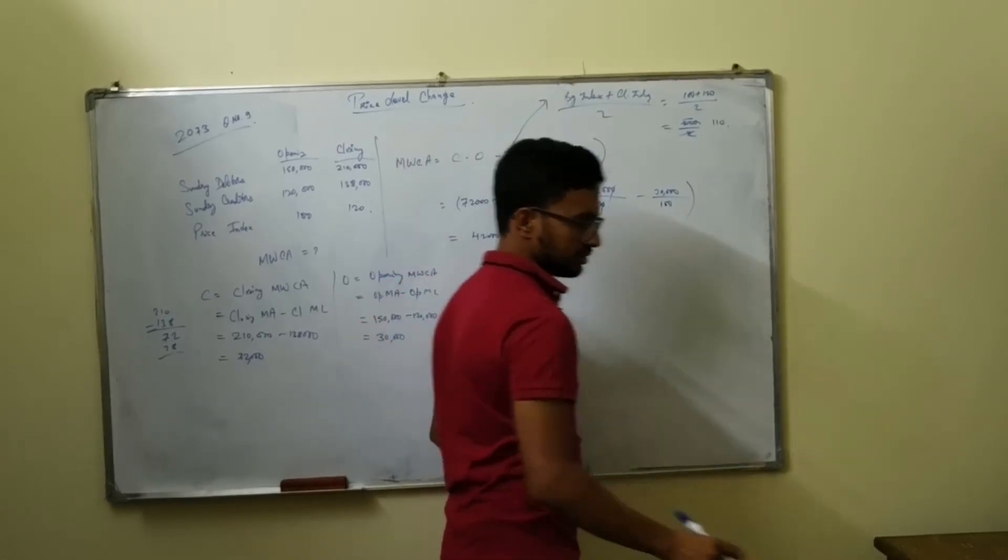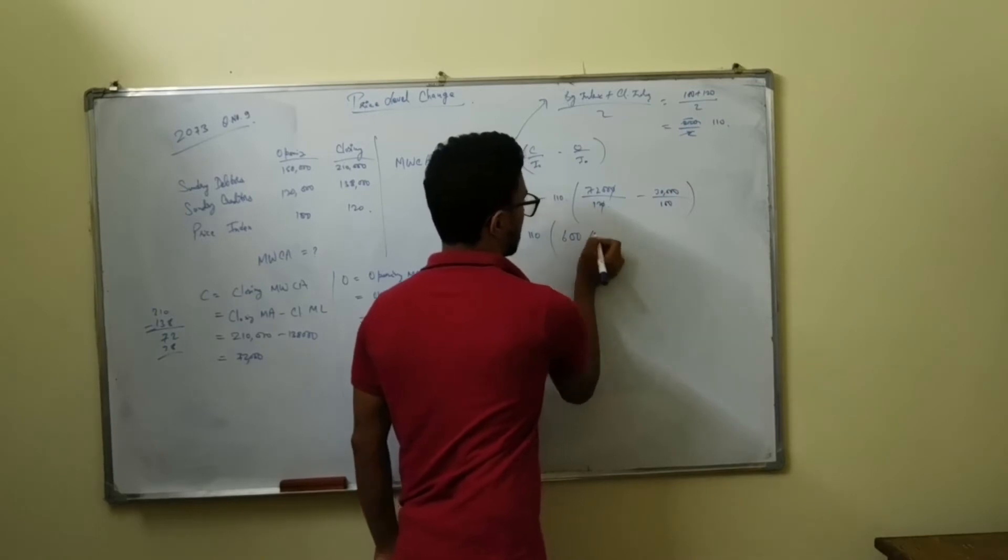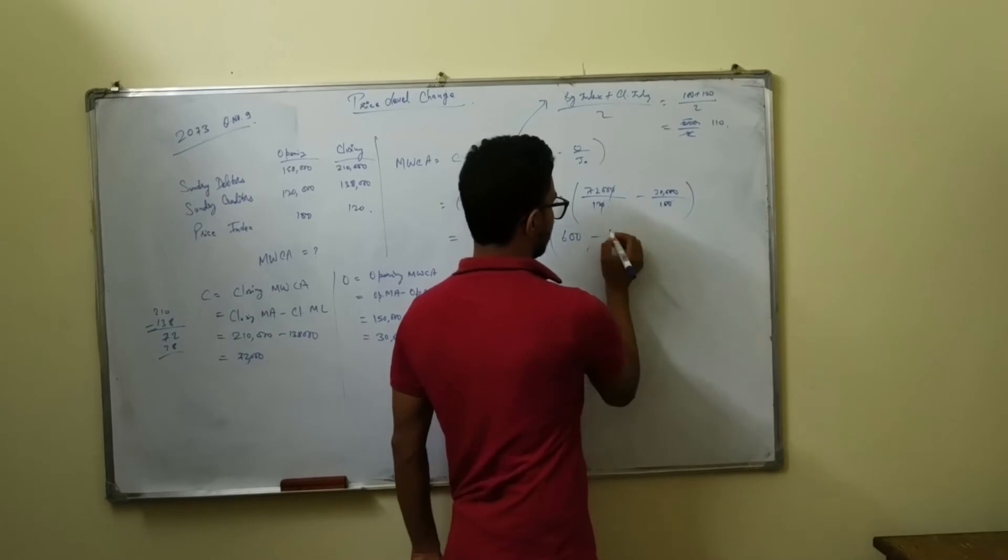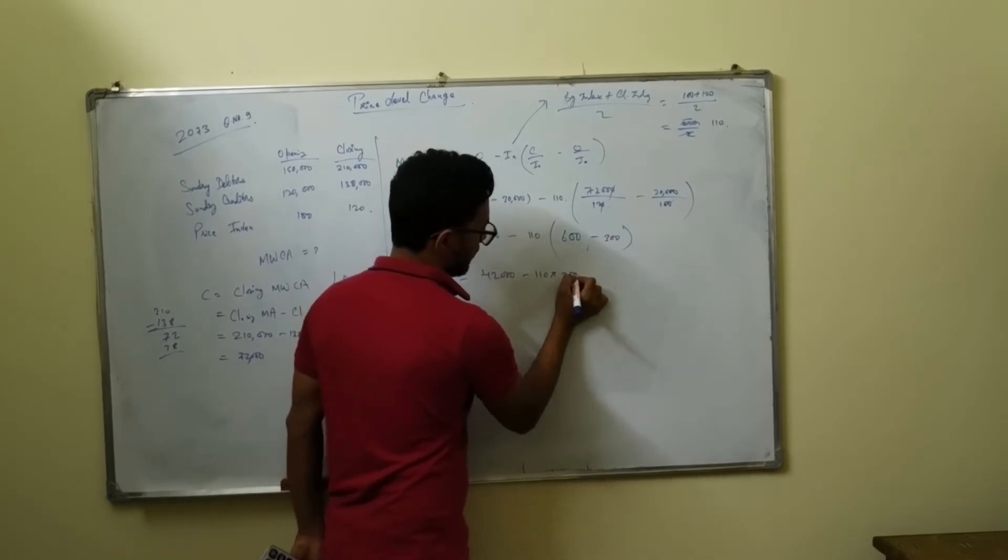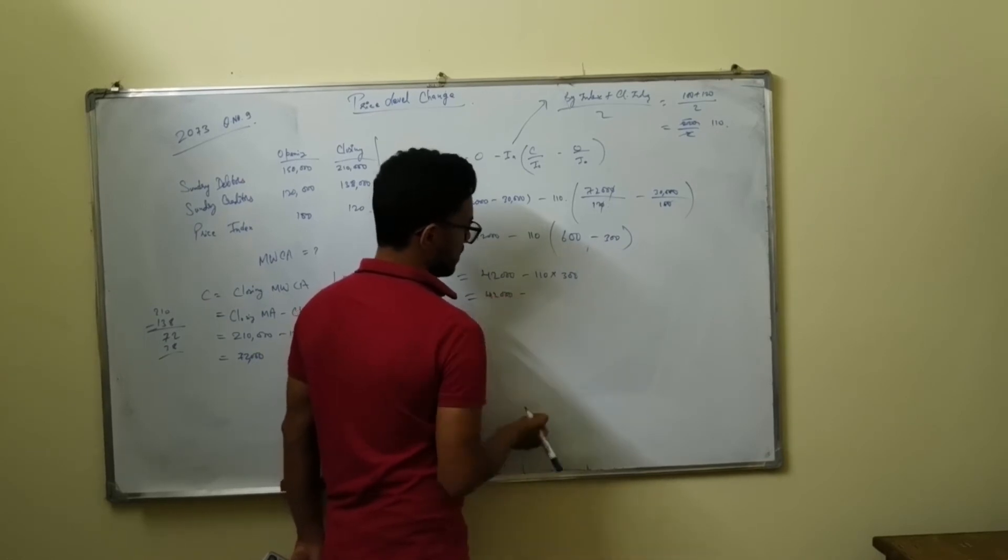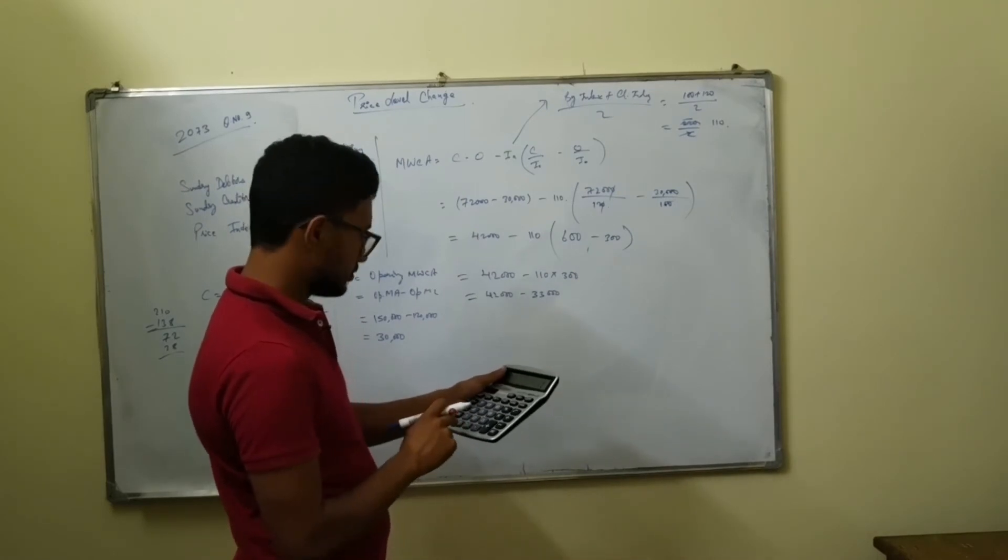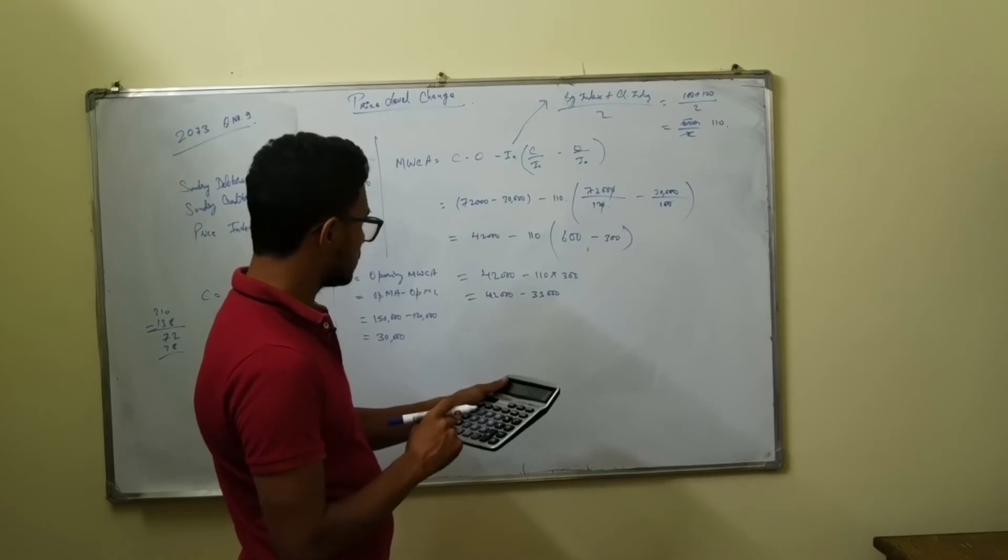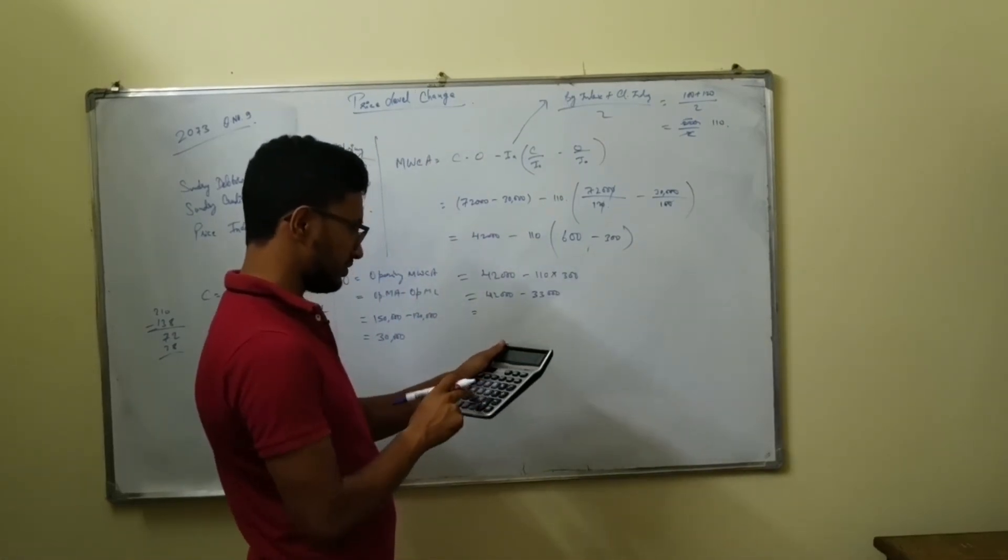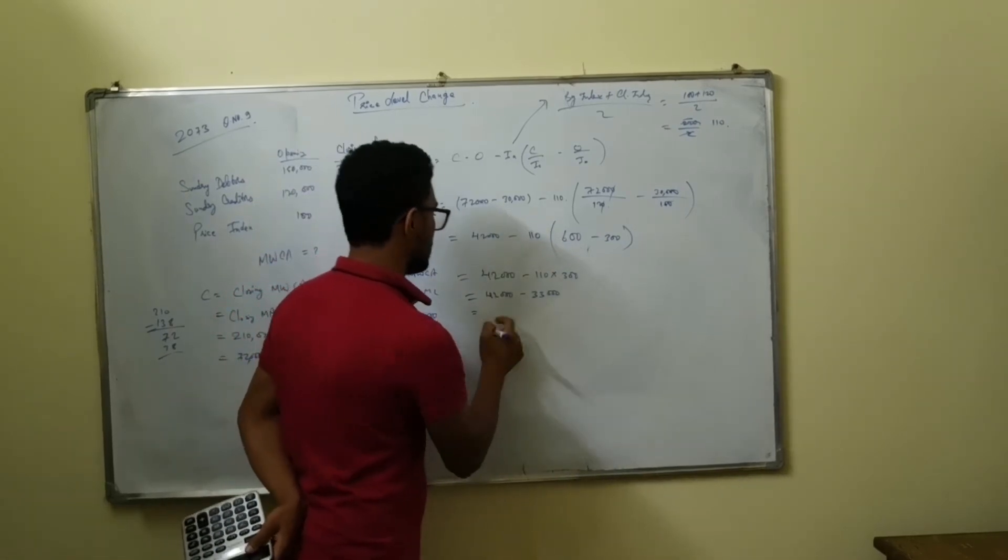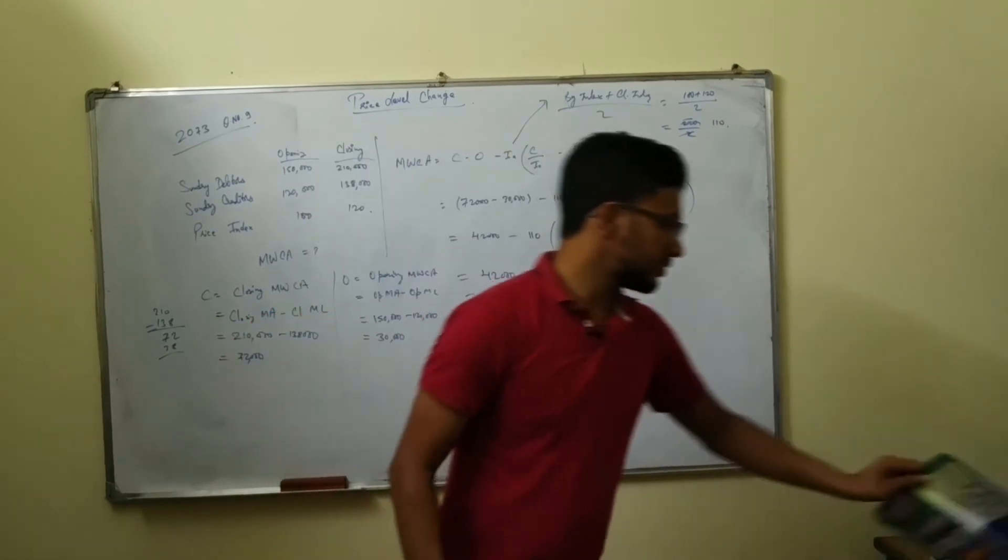This will give us 10,000 minus 13,000. This will give us 42 minus 33,000. So this will give us 9,000. 9,000 is our answer.